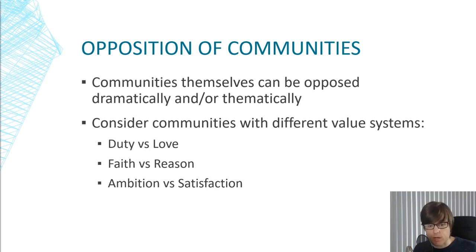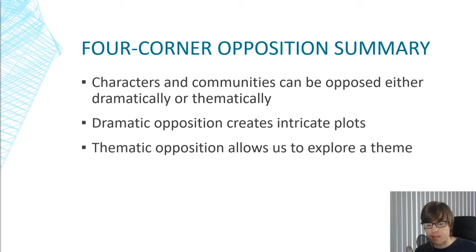So what did we learn today? Characters and communities can be opposed either dramatically or thematically, and they can be opposed in a four-corner opposition way — meaning there's more than just the protagonist and the antagonist. Dramatic opposition can create intricate plots: generally, the more opponents you add, the more intricate the plot, though we must be careful the plot doesn't become muddled or confusing. And thematic opposition allows us to explore a story's theme.